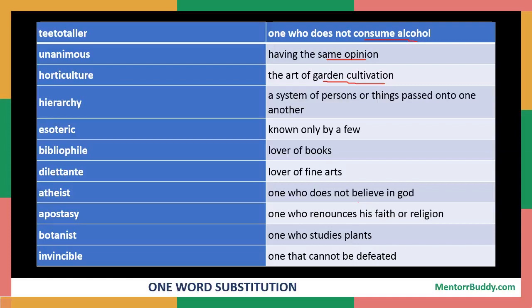Then we have 'esoteric', which means known only by a few. Then we have 'bibliophile' — the root word is 'biblio' and we know that biblio is related with books because we have written bibliography after our projects. So even if you sometimes don't know the exact meaning, you can get a good idea from the root word. Bibliophile means lover of books, somebody who has a love of books.